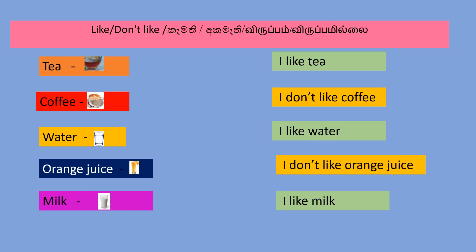Like, don't like. Tea — I like tea. Coffee — I don't like coffee. Water — I like water. Orange juice — I don't like orange juice.